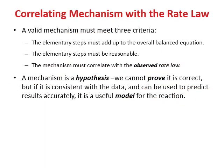A proposed mechanism must meet three criteria: the elementary steps must add up to the overall balanced equation; the steps must be chemically reasonable; and the mechanism must be consistent with the observed rate law. A mechanism is a hypothesis — it cannot be proven correct, but if it's consistent with experiments, it's a useful model.